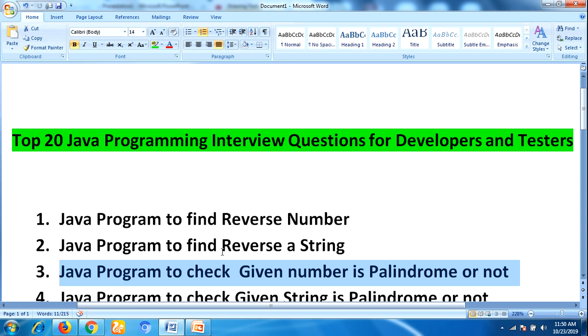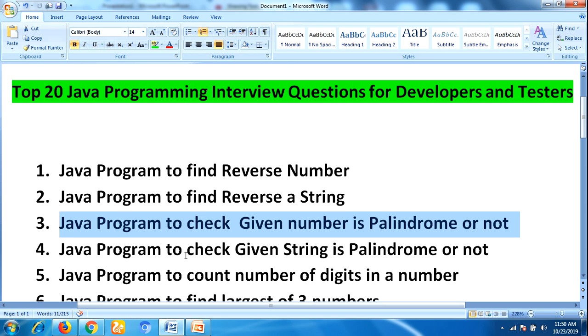Second one: to find a reverse string. Third one: Java program to check if the given number is palindrome or not. Fourth one: Java program to check if the given string is palindrome or not. Fifth one: Java program to count the number of digits in a number.